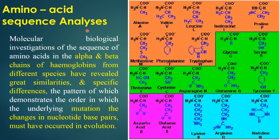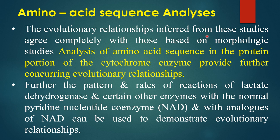Amino acid sequence analysis: molecular biological investigation of the sequence of amino acids in the alpha and beta chains of hemoglobin from different species has revealed great similarities and specific differences. The pattern demonstrates the order in which underlying mutations — changes in nucleotide base pairs — must have occurred in evolution. The evolutionary relationships inferred from these studies agree completely with those based on morphological studies. Analysis of amino acid sequence in the protein portion of the cytochrome enzyme provides further converging evolutionary relationships. The pattern and rates of reaction of lactate dehydrogenase and certain other enzymes with NAD and its analogs can also be used to demonstrate evolutionary relationships.